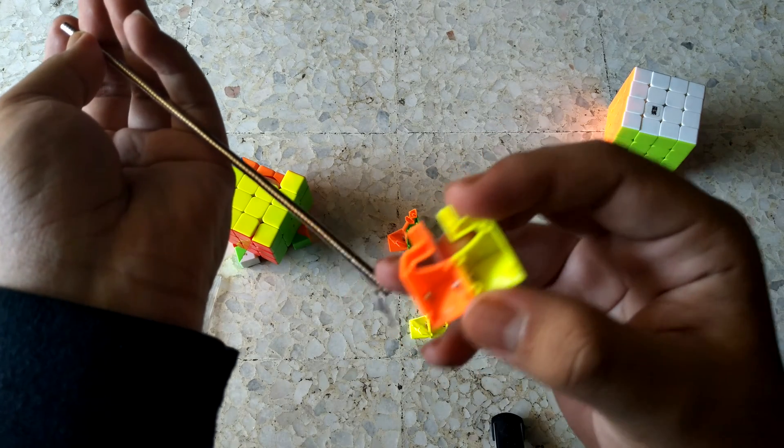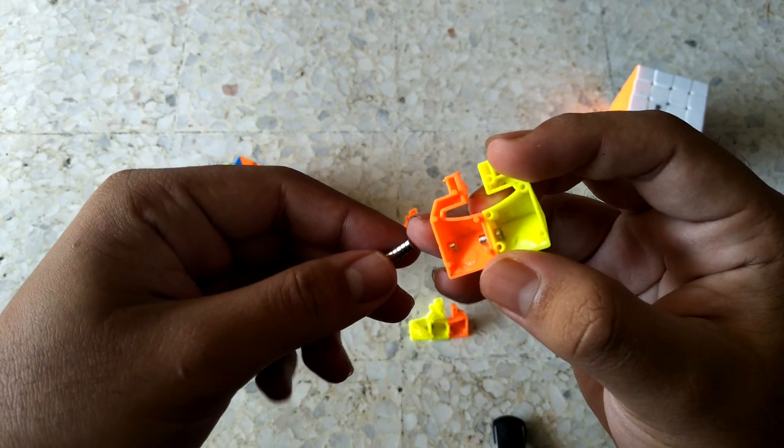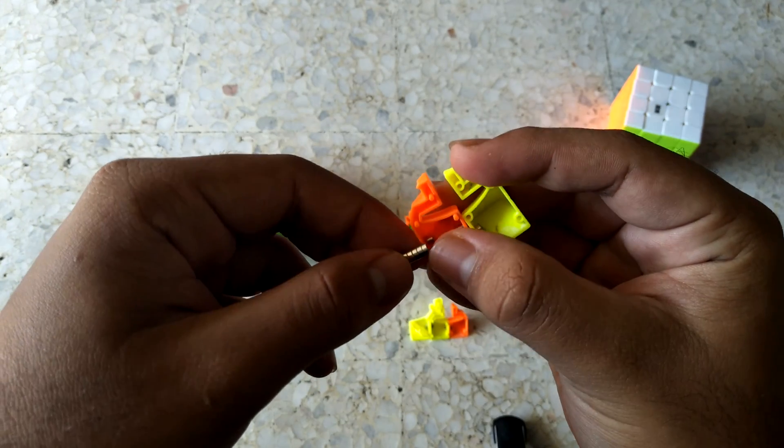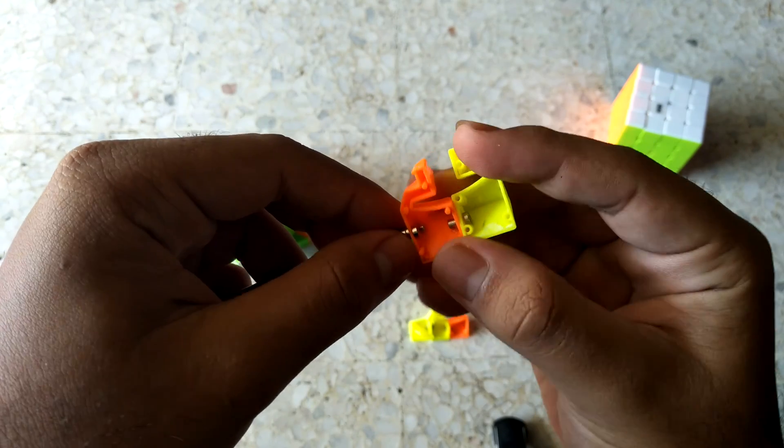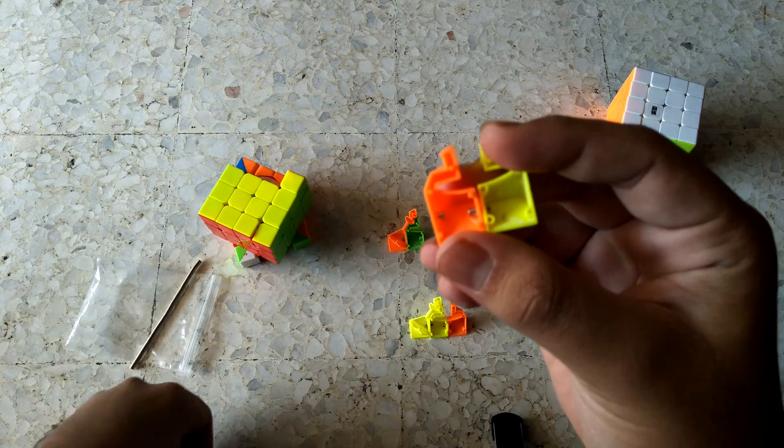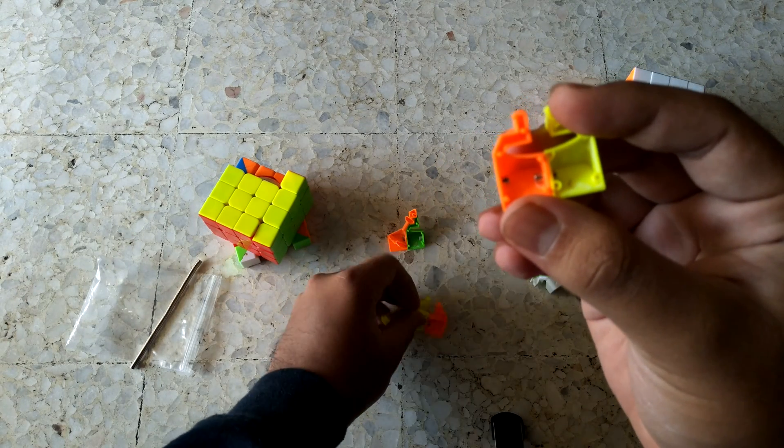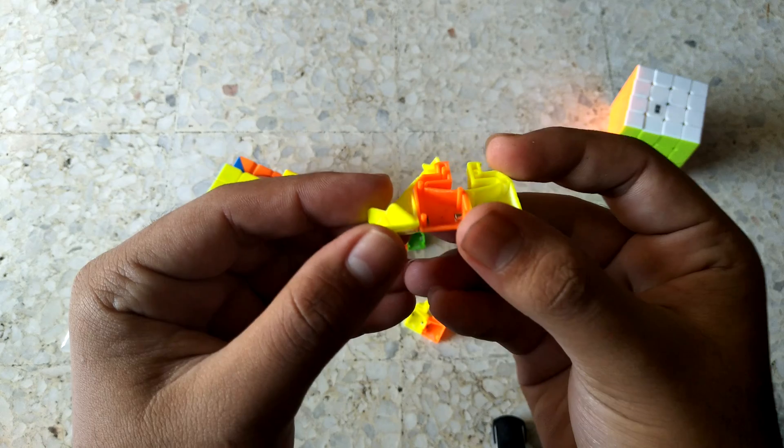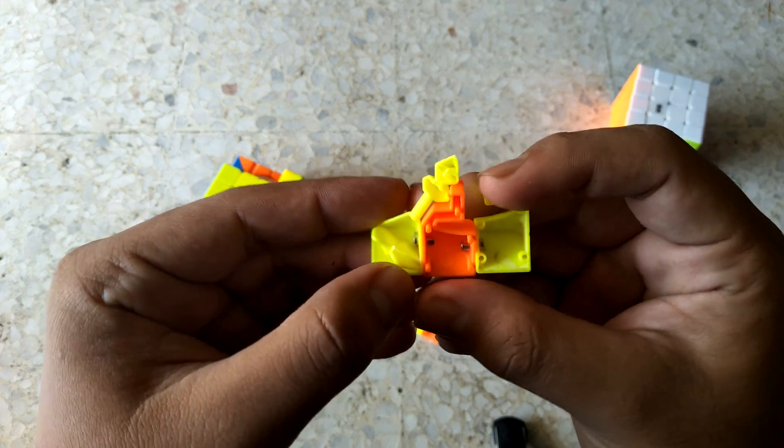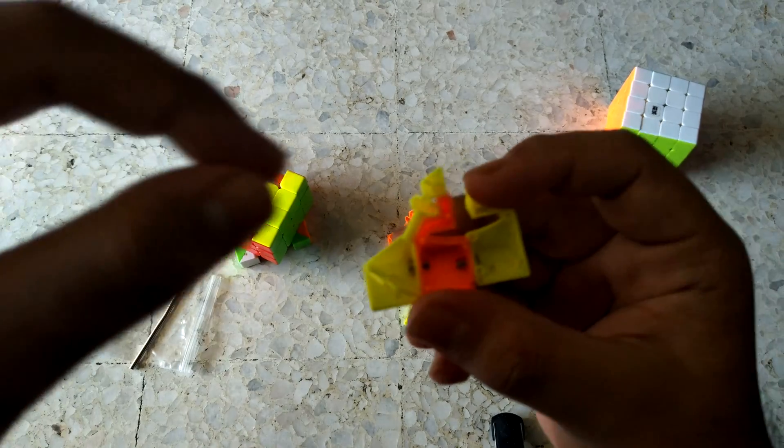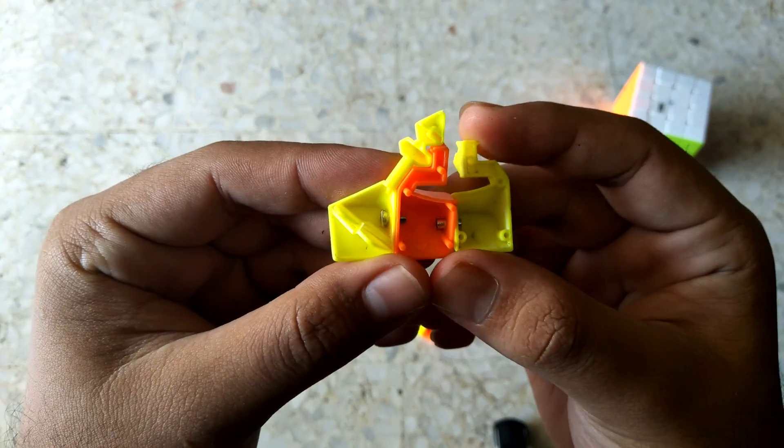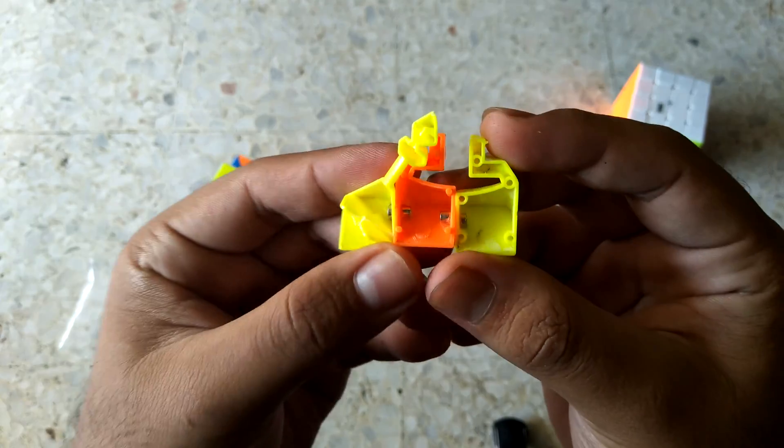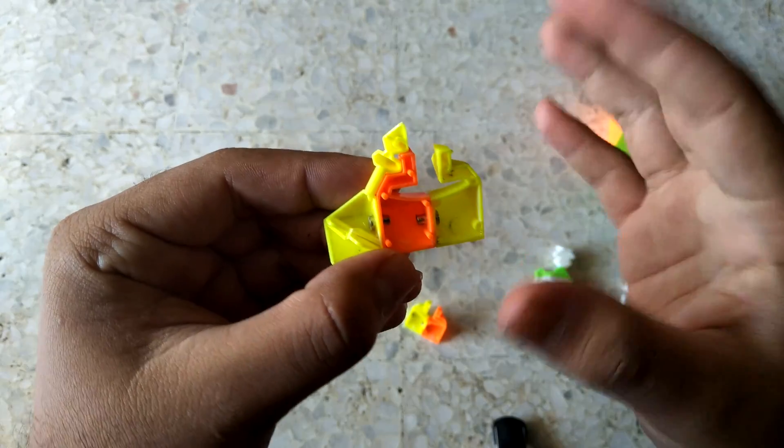And then using the same method, you do that for this one. Remember, don't take the magnet from here - only take the magnet from this one. Then you just put it here like that and then glue. Then you take your corner piece, put it aside, make sure it aligns perfectly, and then just put glue inside and drop your magnets. It is all done.